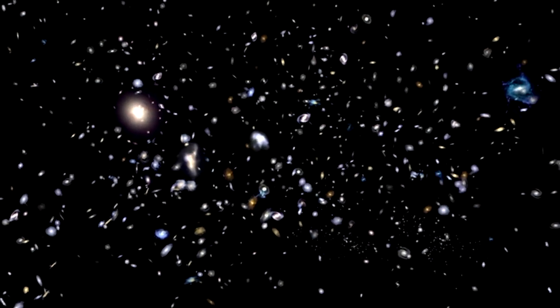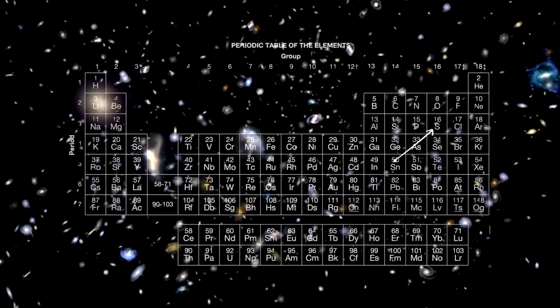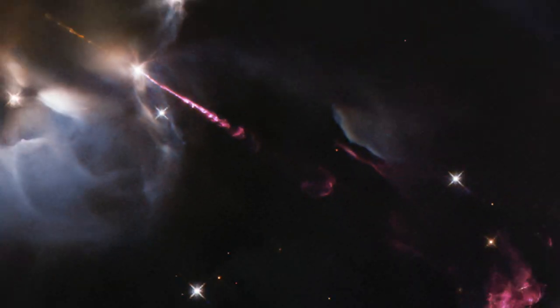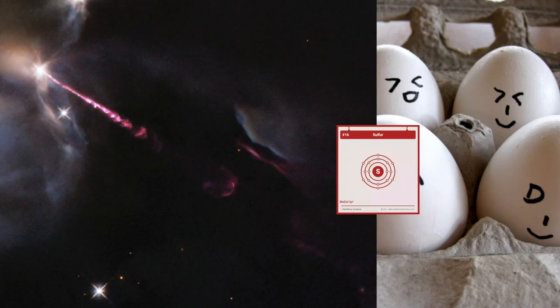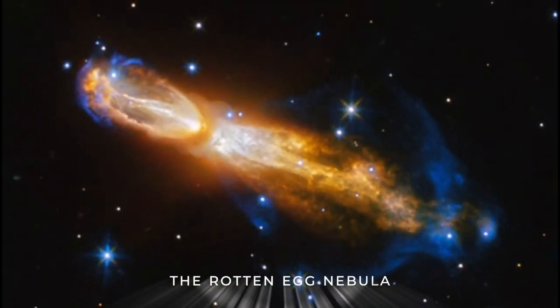One of the more prominent elements found inside the Calabash Nebula is sulfur, which also adds an interesting scent to this cosmic structure. If you were to get close enough to this nebula, you would be overwhelmed by the smell of rotten eggs, which has led to the fitting nickname the Rotten Egg Nebula.